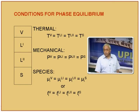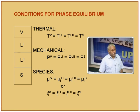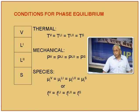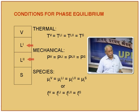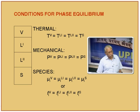Let us quickly review the conditions for phase equilibrium. What we have shown here are four phases to make the discussion more general: the vapor phase, two liquid phases, and sometimes a solid phase. In the hydrocarbon industry, the two liquid phases are typically the hydrocarbon phase and the aqueous phase. Given a certain number of phases, the first and foremost condition for equilibrium is thermal equilibrium.